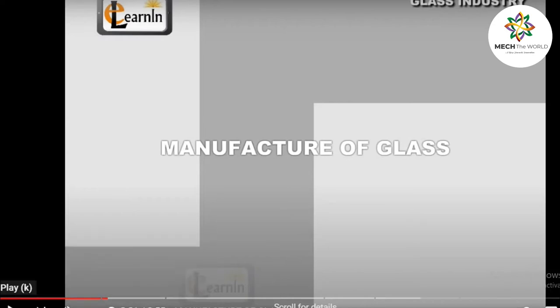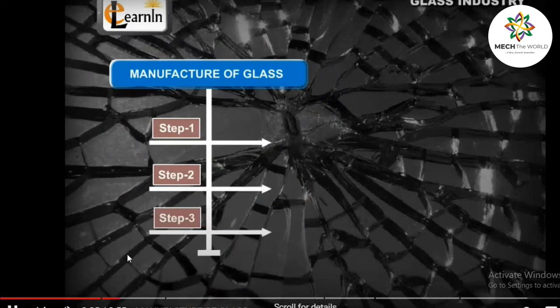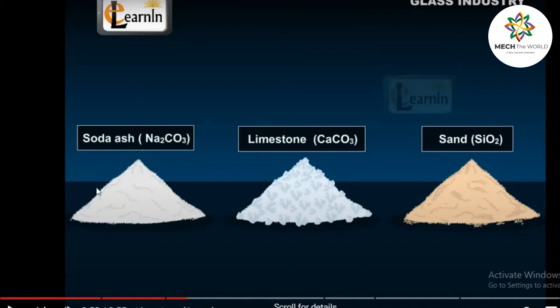This is a natural cooling process — we are not interfering with it. The temperature is decreasing naturally, quite rapidly. Soda ash and limestone are used to reduce the melting point temperature of sand. Soda ash and limestone help the sand to become liquefied.